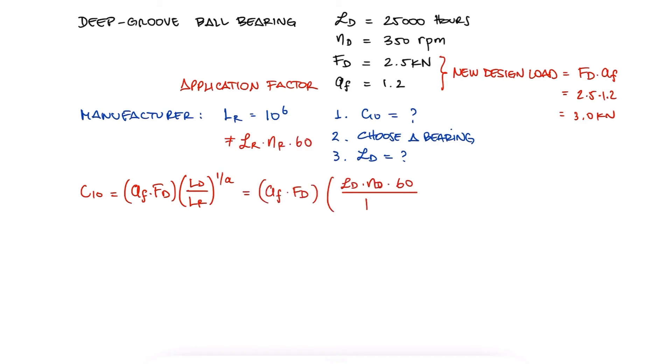Simplifying this expression and substituting the values, we find a catalogue rating C10 equal to 24.2 kN.